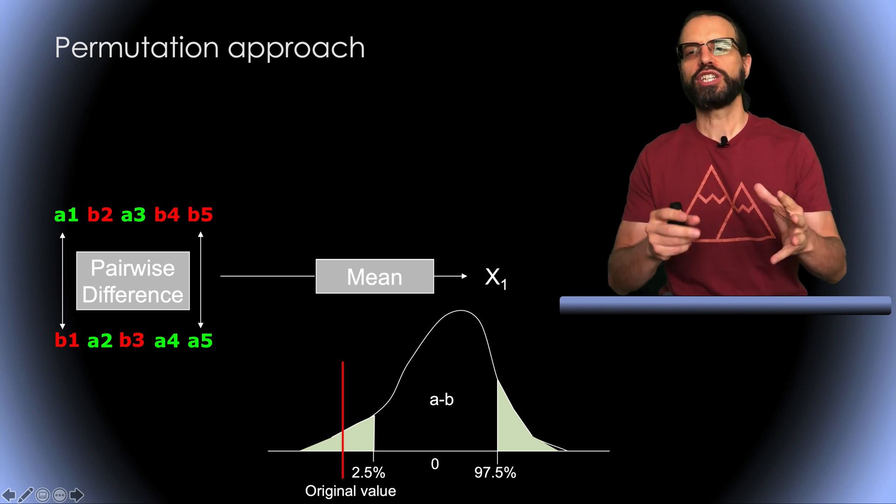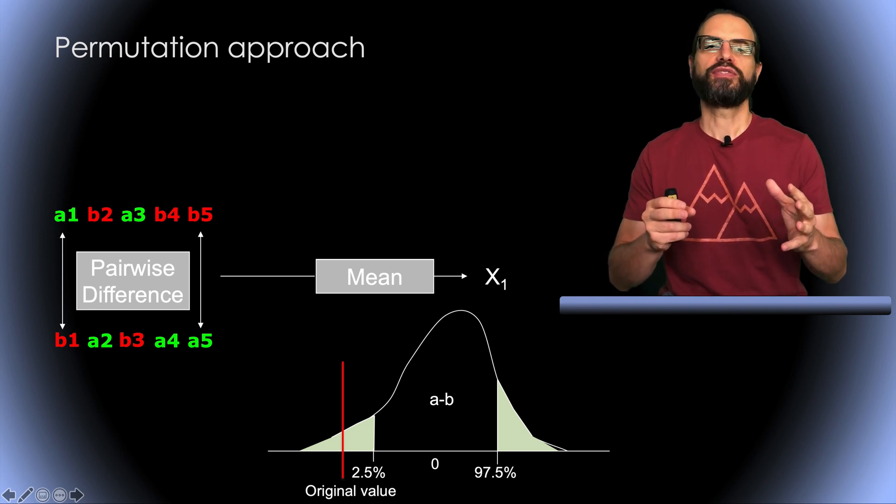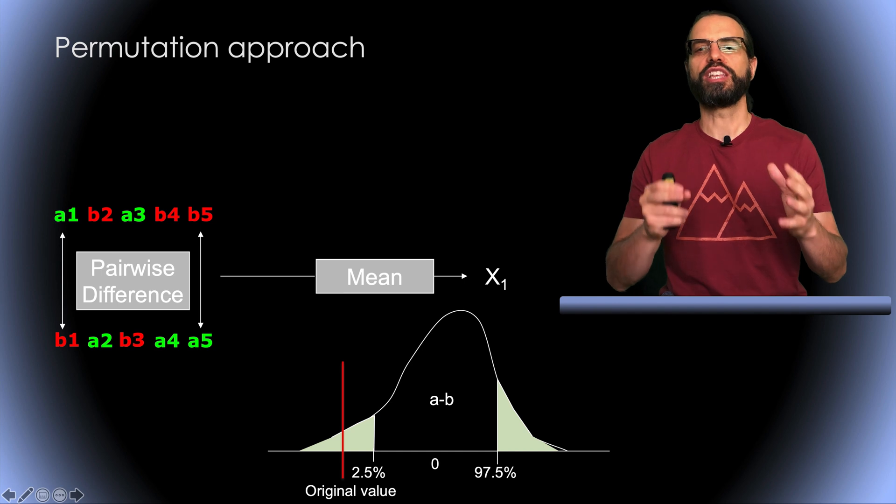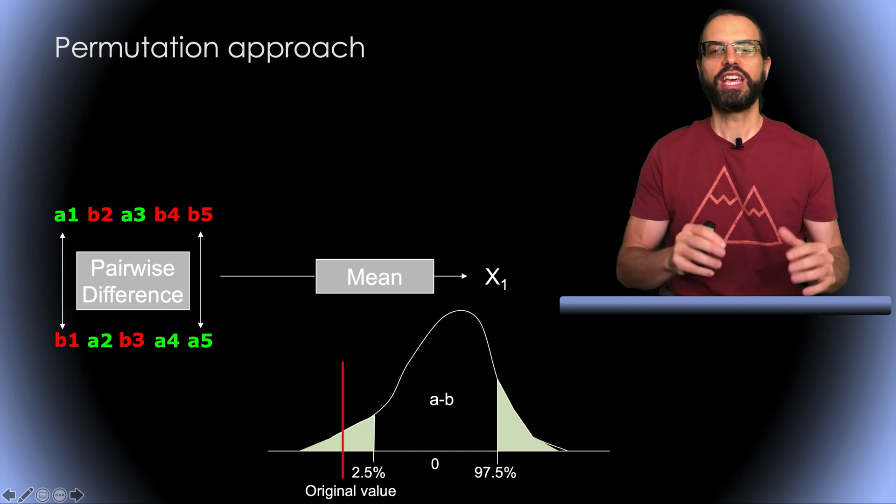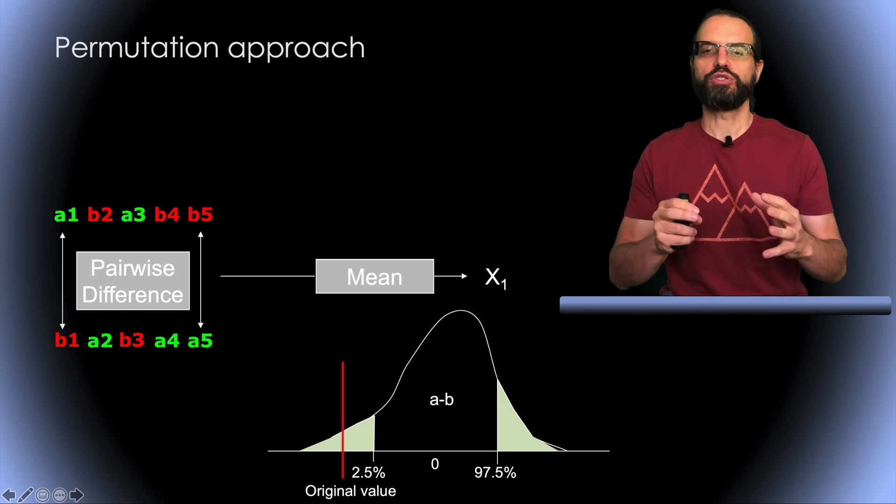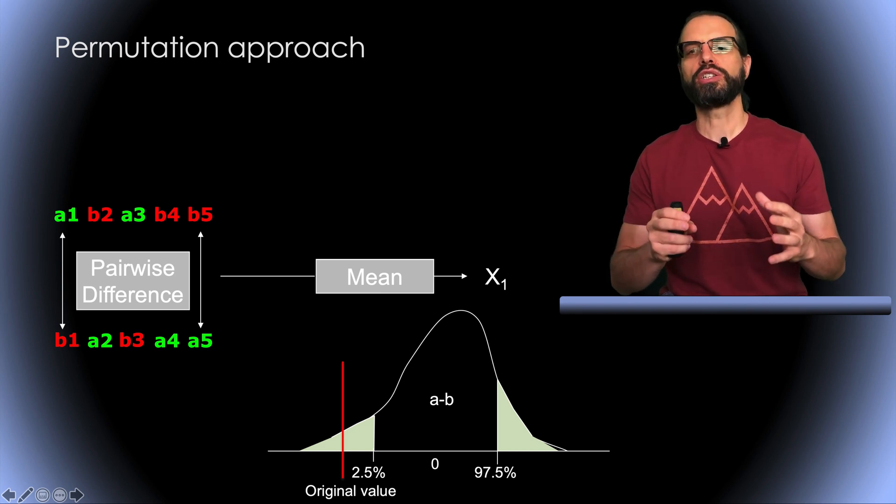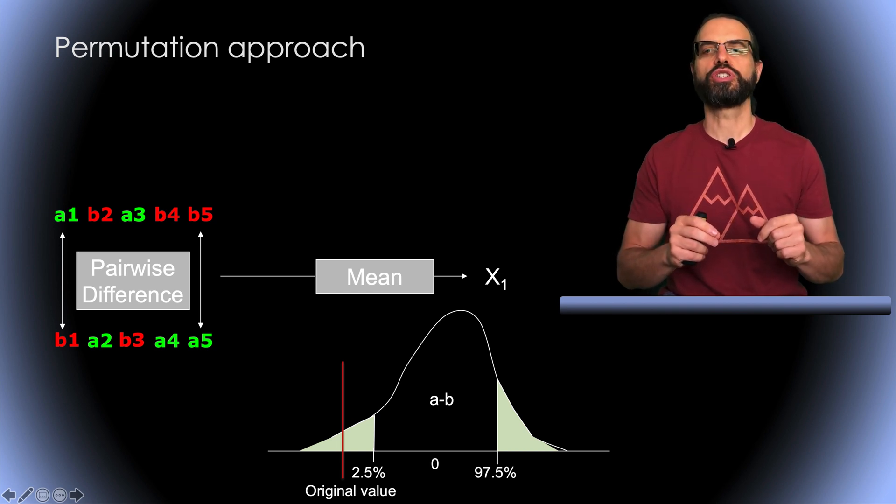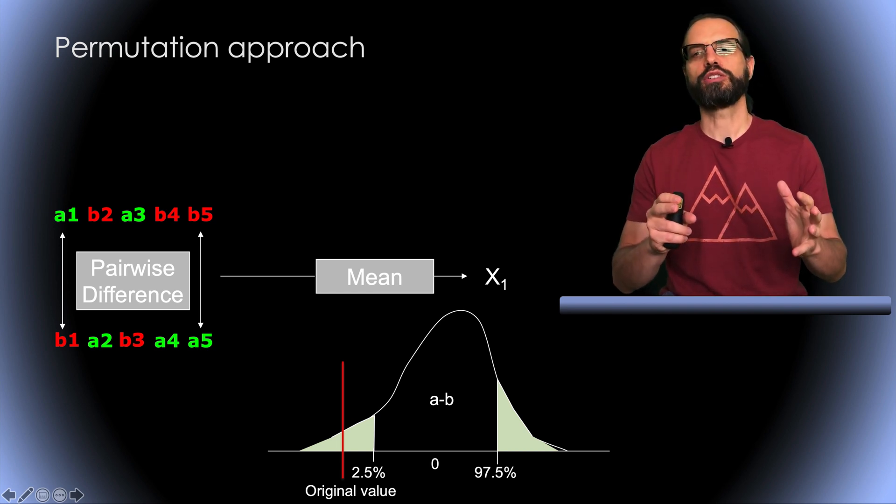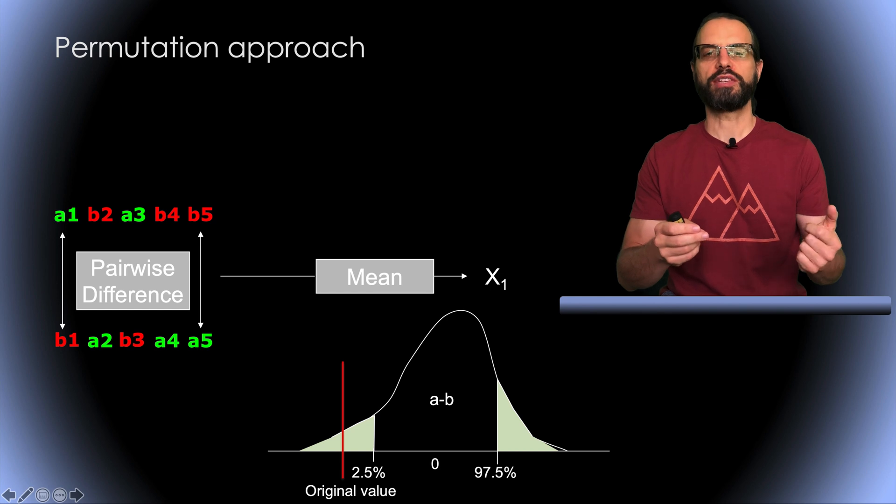Then we can take the average of the pairwise difference. Note that this is equivalent to randomly inverting the sign of some of the pairwise differences before taking the mean. Then we can build our null distribution and assess if the original unpermuted mean difference lies in the tail of the null distribution. If it does, then we can conclude that the two conditions are significantly different.